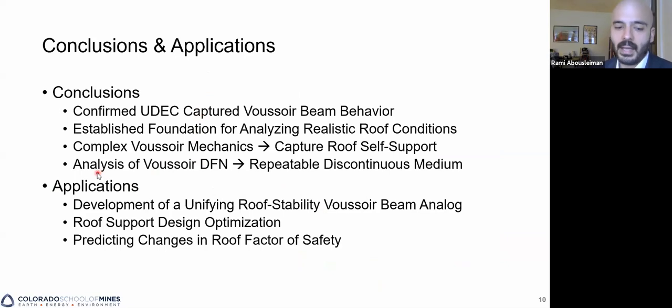And finally, as a bonus, analysis of a Voussoir DFN fracture network in the roof provided us with a repeatable discontinuous medium that we could use for more complicated numerical models where the geometry of those joints, the placings in relation to other joints and to other elements in the models would not be affected by the geometry explicitly.